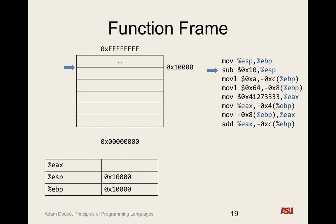So ESP is now FFF0. Each line on the stack is 4 bytes, and we decreased ESP, so the arrow goes down — toward smaller addresses. We move down four positions. The stack pointer is now at FFF0, but the base pointer is still at 10000. We now have two arrows. Everything below FFF0 is garbage/replaceable; everything above is important. This is essentially an allocation — we've said we're going to use these four values.